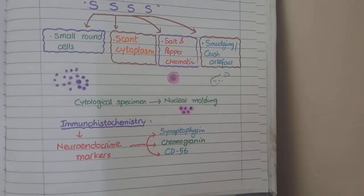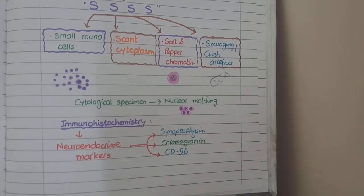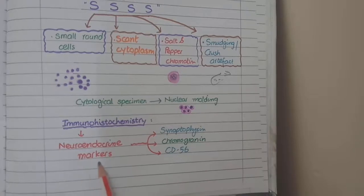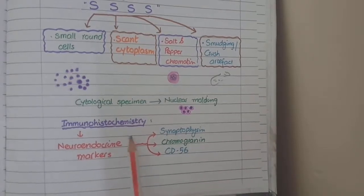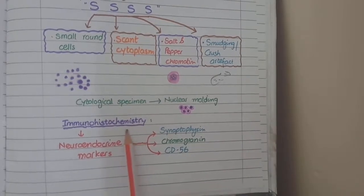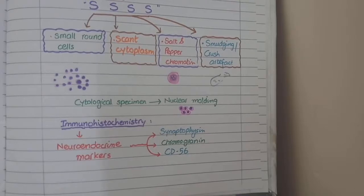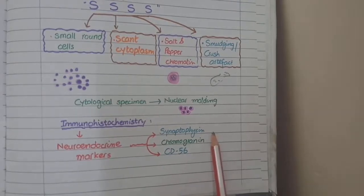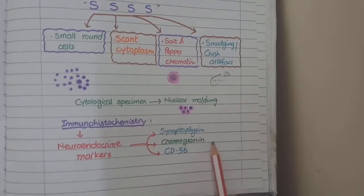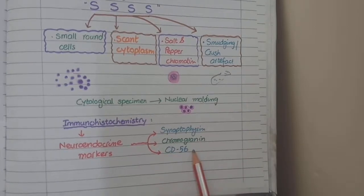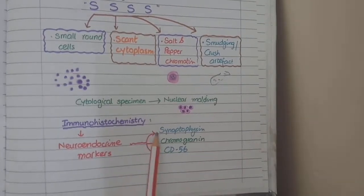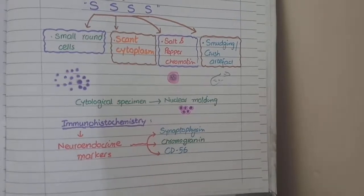The tumor cells of small cell carcinoma also have neuroendocrine markers that can be stained by immunohistochemical techniques to further help in diagnosis. These neuroendocrine markers are synaptophysin, chromogranin, and CD56.